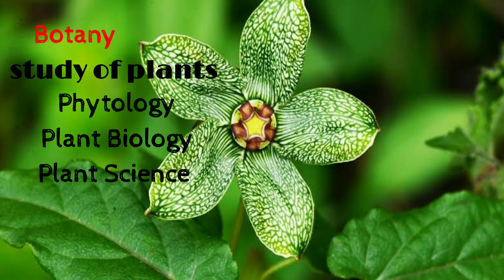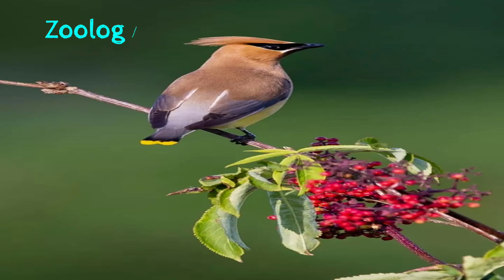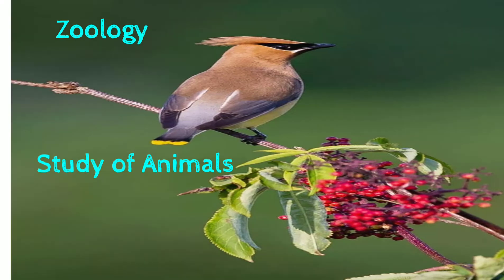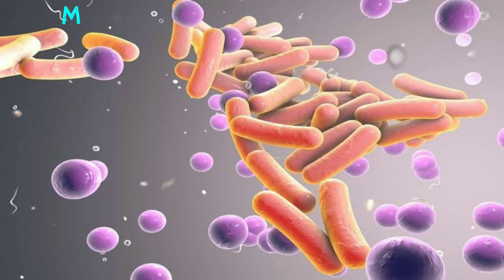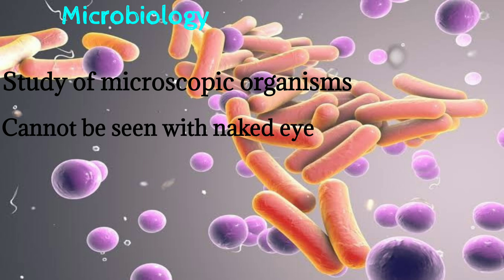The second branch of biology is zoology — it is the study of animals. The third branch is microbiology, which deals with the study of microscopic organisms that cannot be seen with the naked eye, such as bacteria, viruses, and other microscopic organisms.